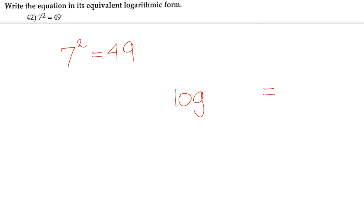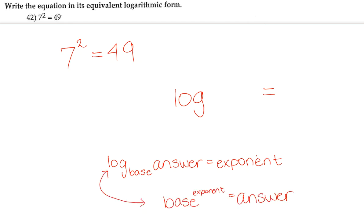log base answer equals exponent, and base exponent equals answer. These are interchangeable. So 7² = 49 is in the base exponent equals answer form, where our base is 7, our exponent is 2, and our answer is 49.